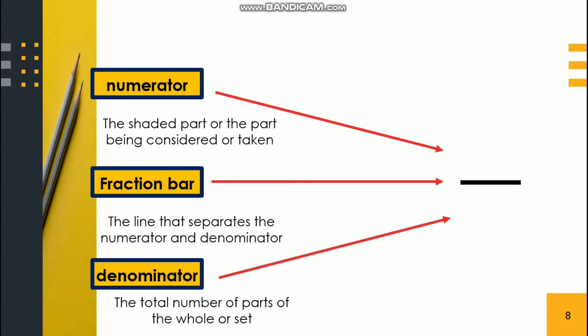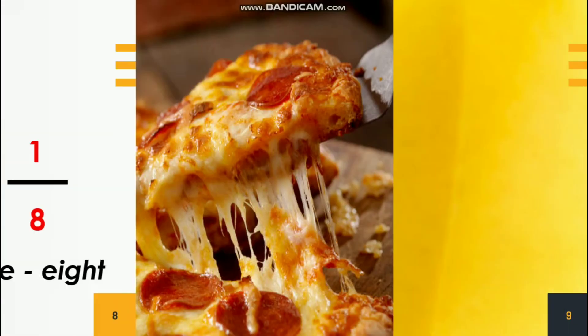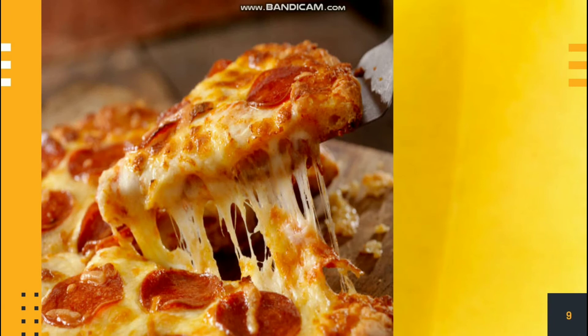Let us apply this in getting the fraction of one slice of the whole pizza. We could tell that one part is being taken, so that will be the numerator. And the whole is divided into eight equal parts, so we have eight in the denominator. From there, we get the fraction one-eighth. Therefore, each of Francis's friends could get one-eighth of the whole pizza.